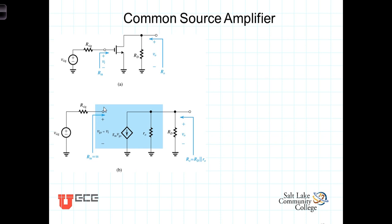From observation, because the signal is connected directly to the gate, the input resistance for the common source amplifier is infinite.